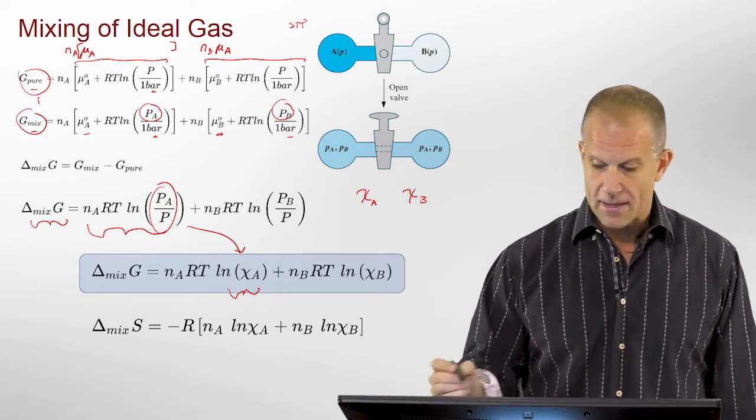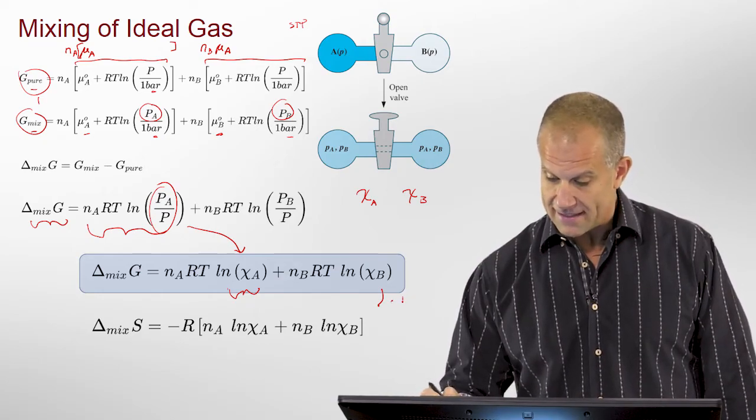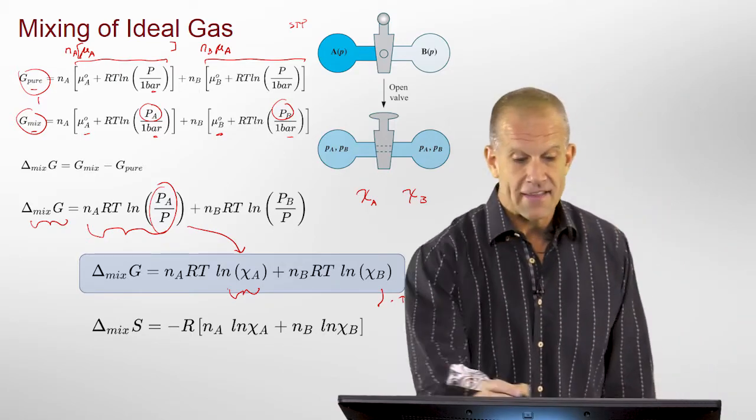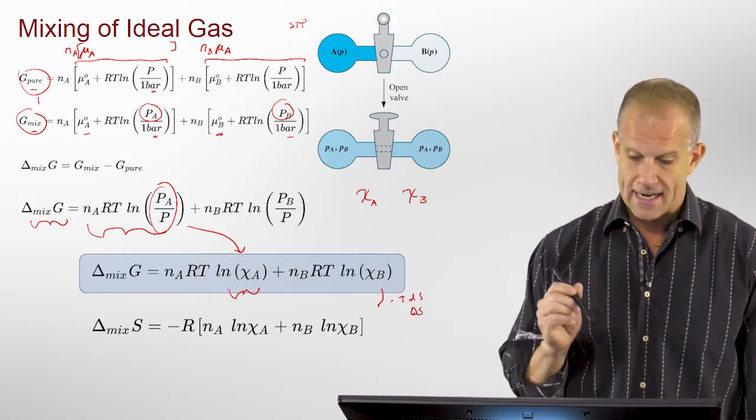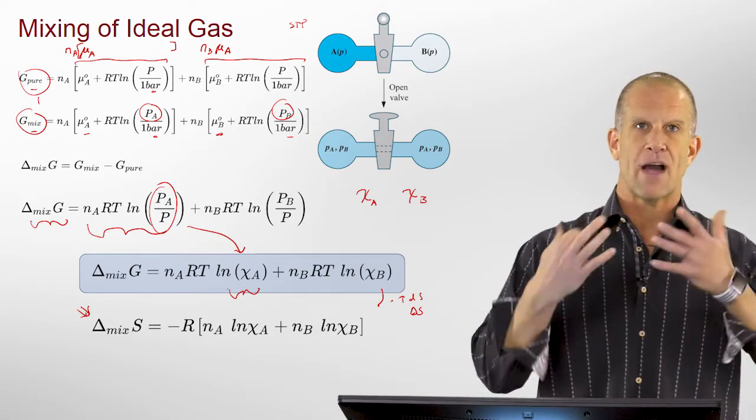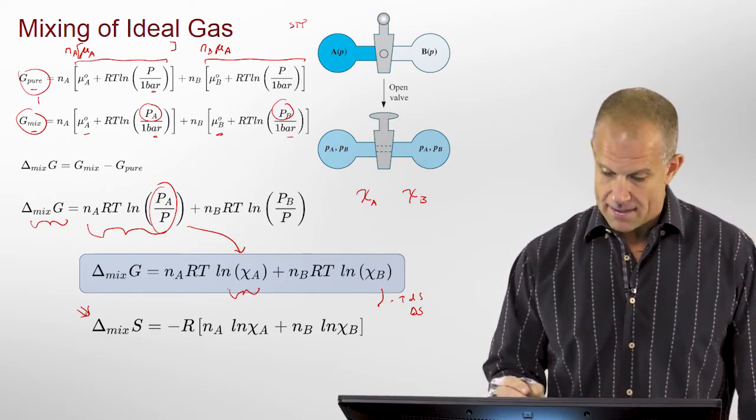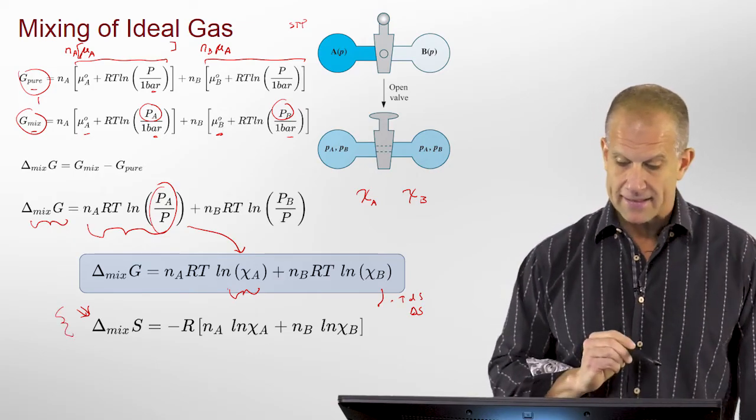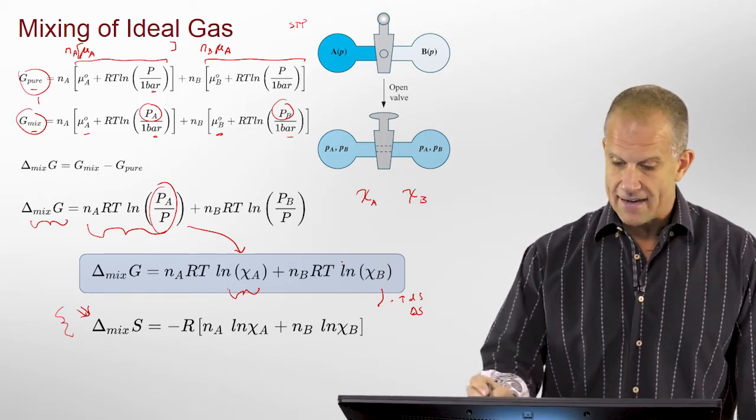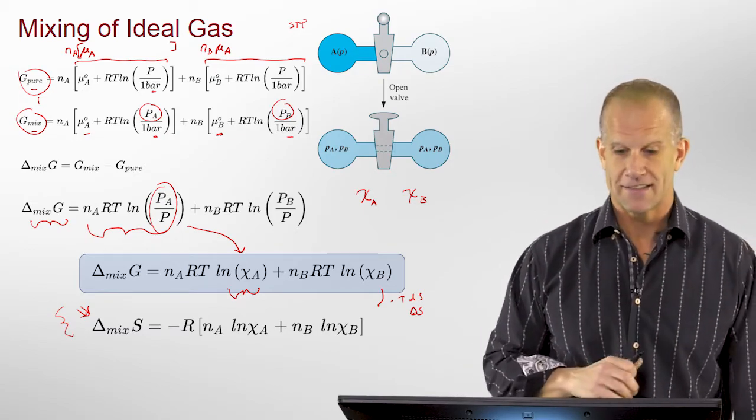And conversely, because we know that this is minus T delta S, or TDS, this gives us a relationship to the entropy mixing, which is actually the way most of the time we derive this from the second law, that you get a maximum in the entropy of mixing as this gets towards a 50-50 mixture, and it minimizes the free energy of that system.